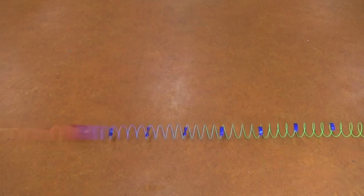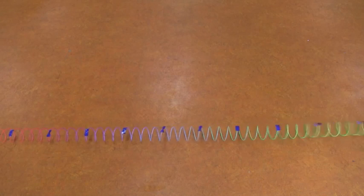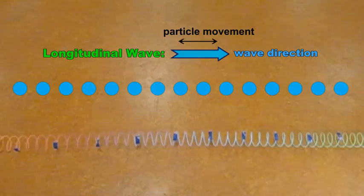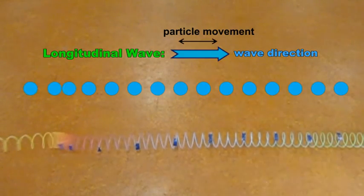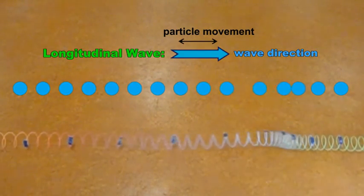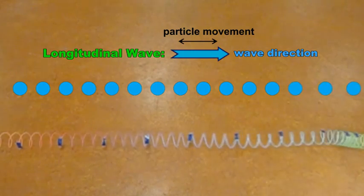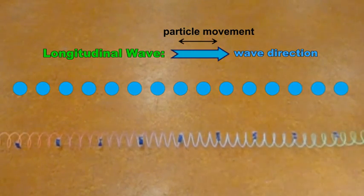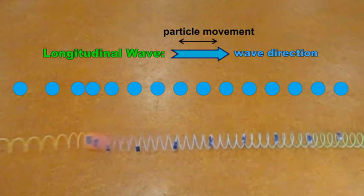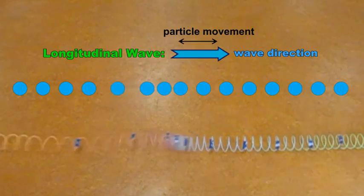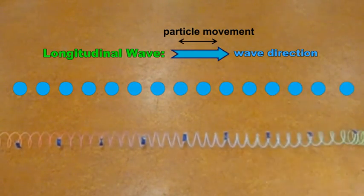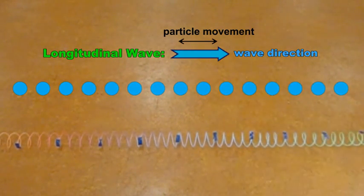When each coil moves side to side in the same direction that the wave is travelling in, the wave is called a longitudinal wave. Each loop is moving first to the right and then to the left as the wave moves from left to right. Sound waves are longitudinal waves.